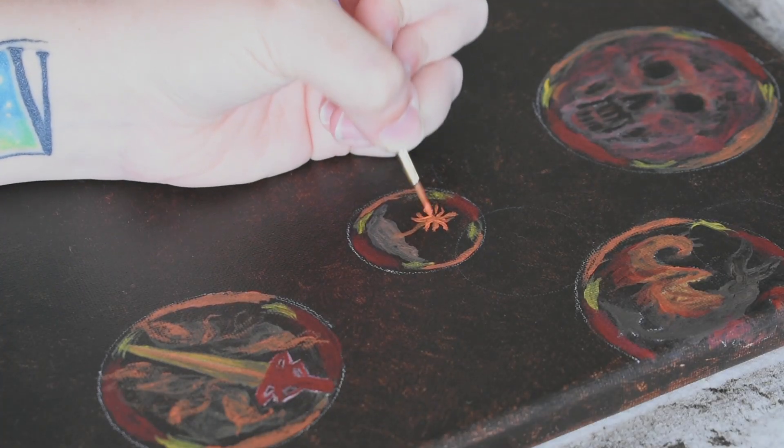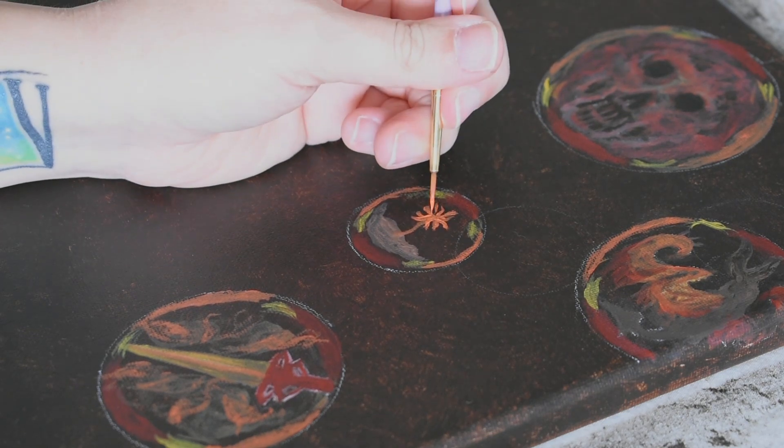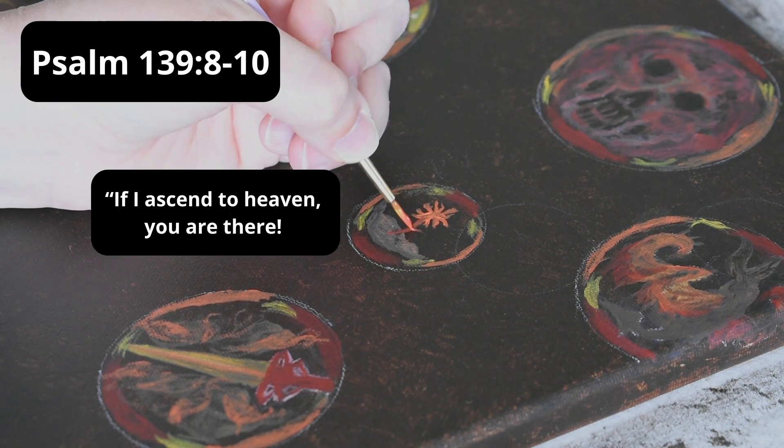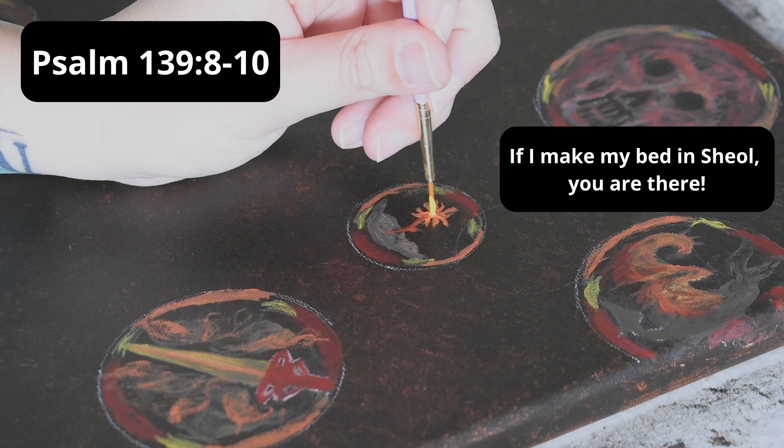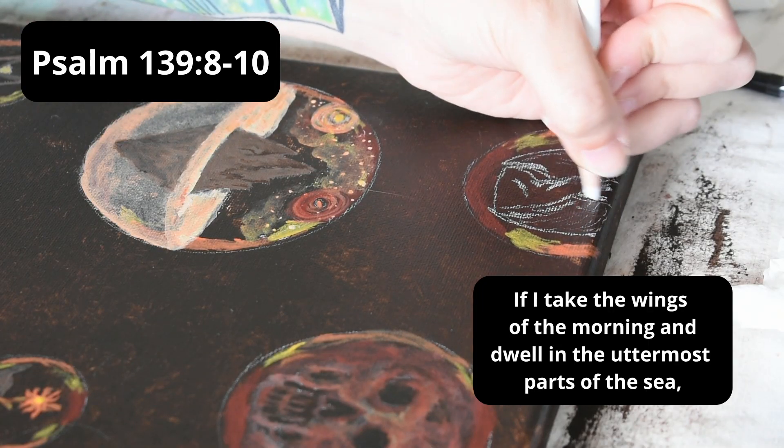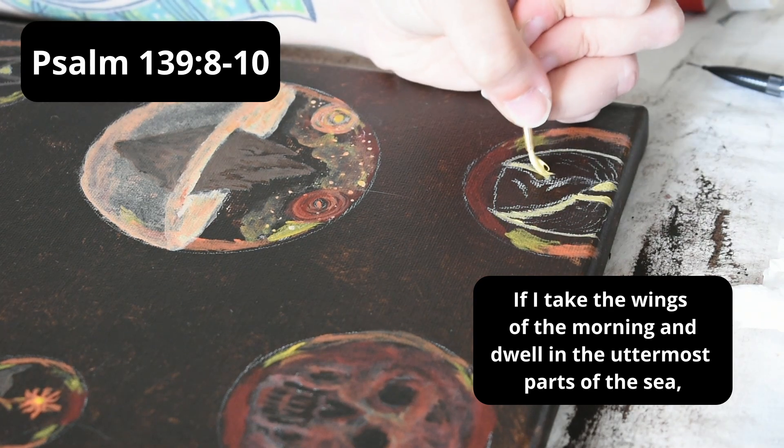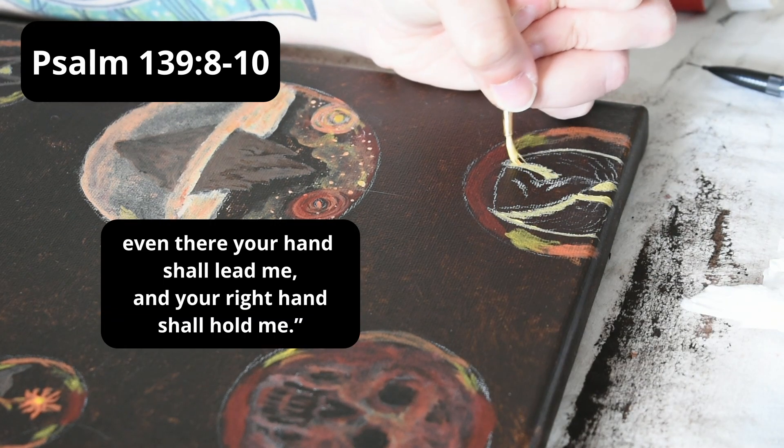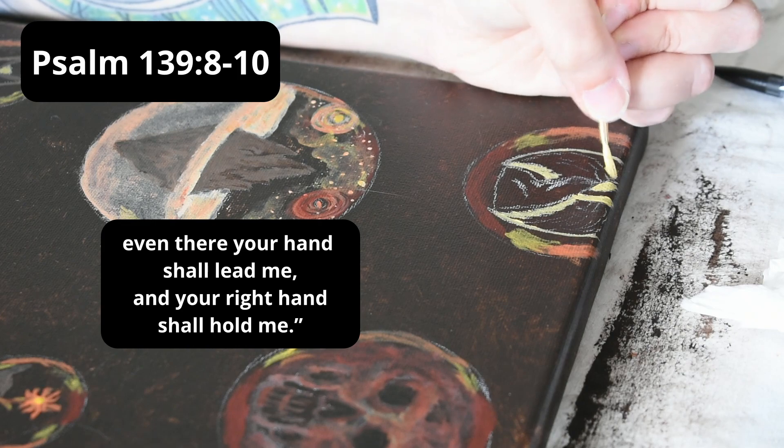And this one in particular makes me think of Psalm 139, 8-10, which says, If I ascend to heaven, you are there. If I make my bed in Sheol, you are there. If I take the wings of the morning and dwell in the uttermost parts of the sea, even there your hand shall lead me, and your right hand shall hold me.